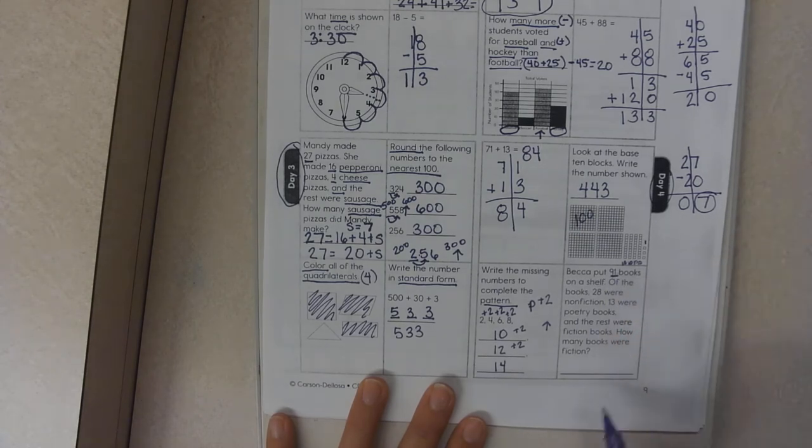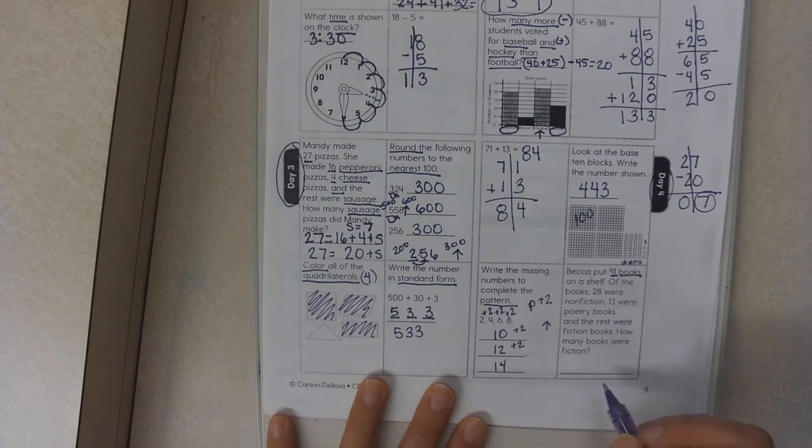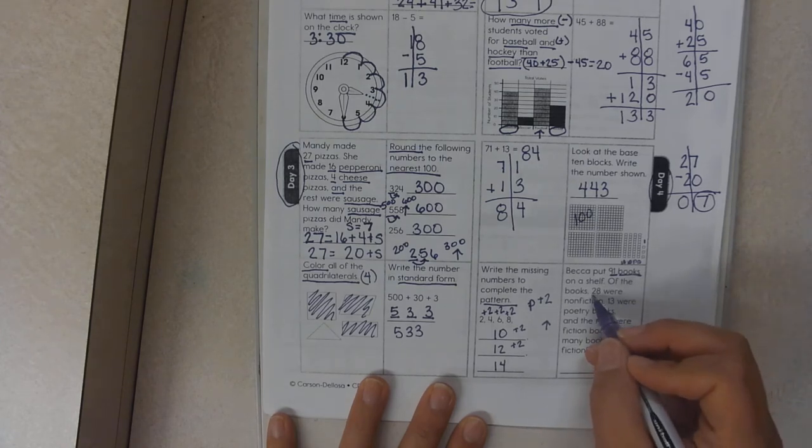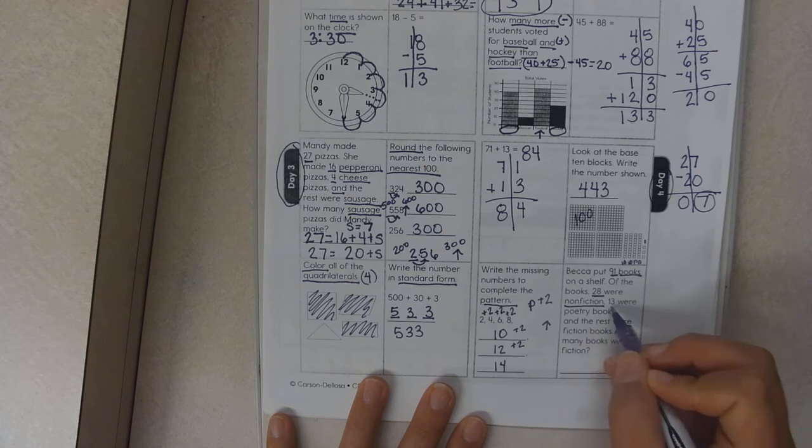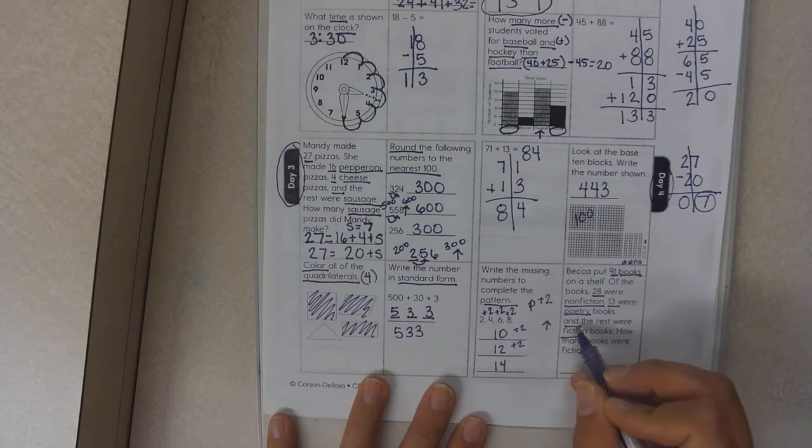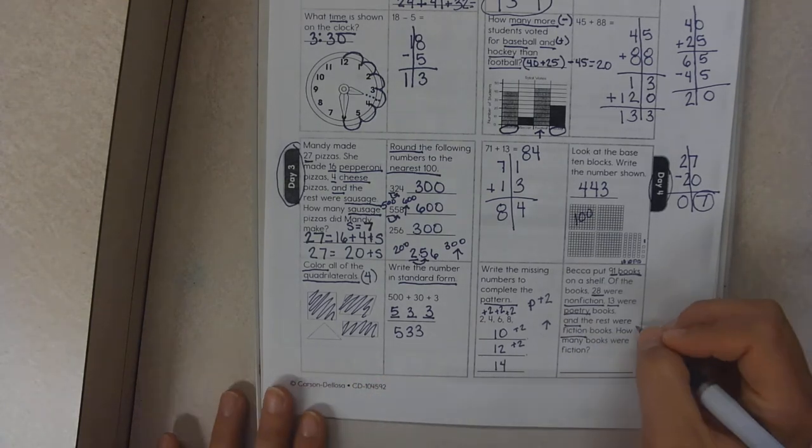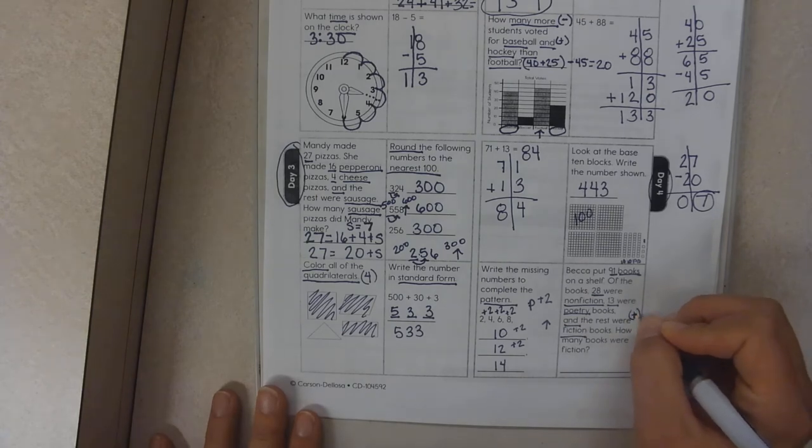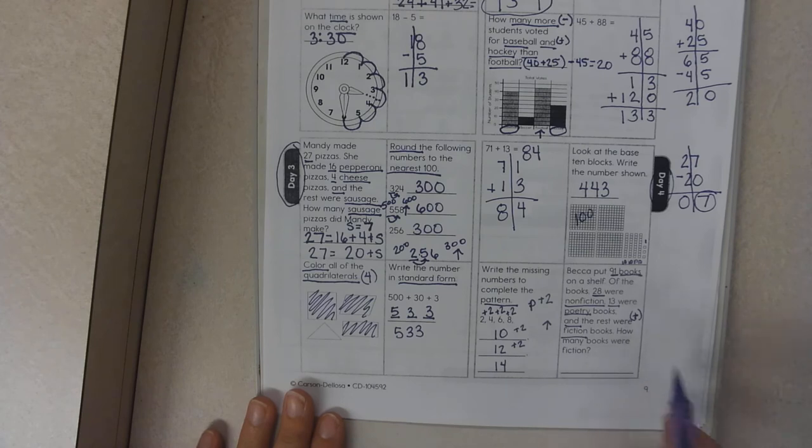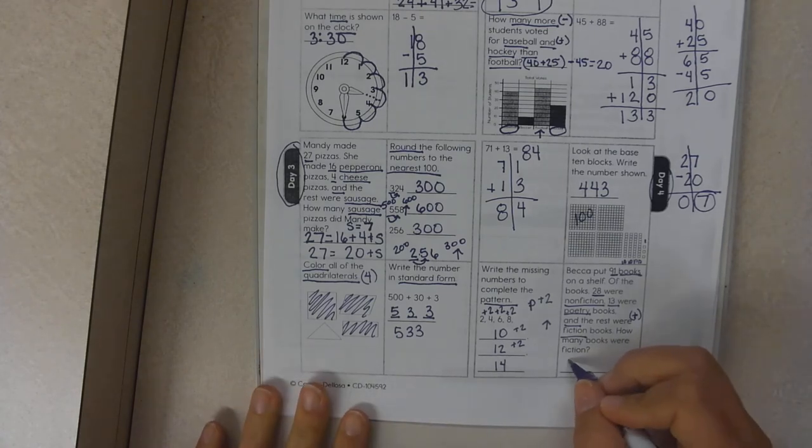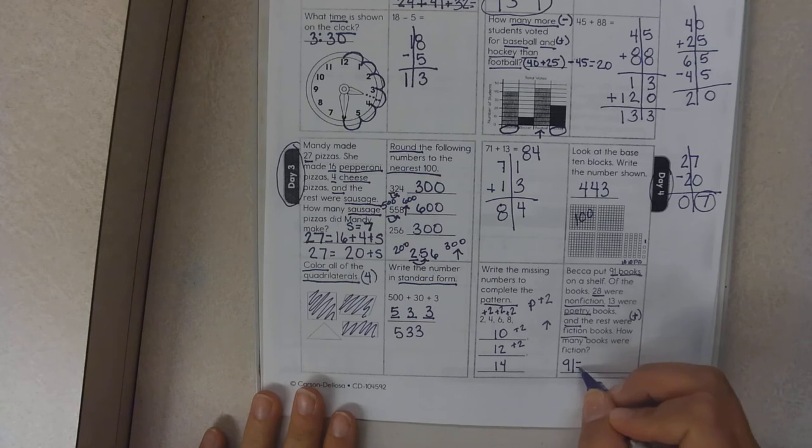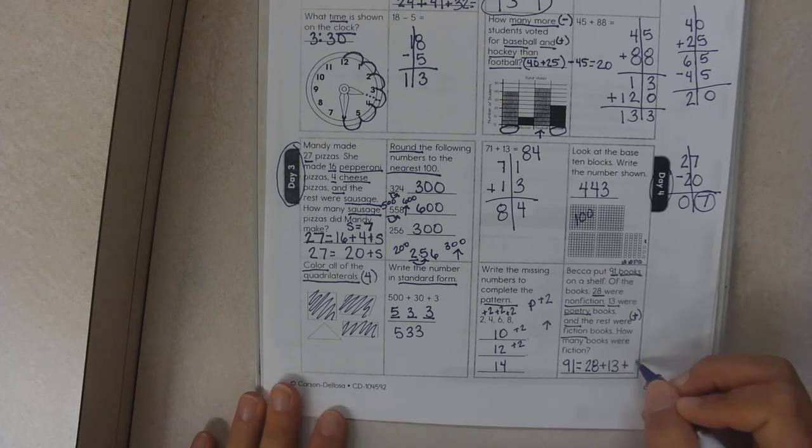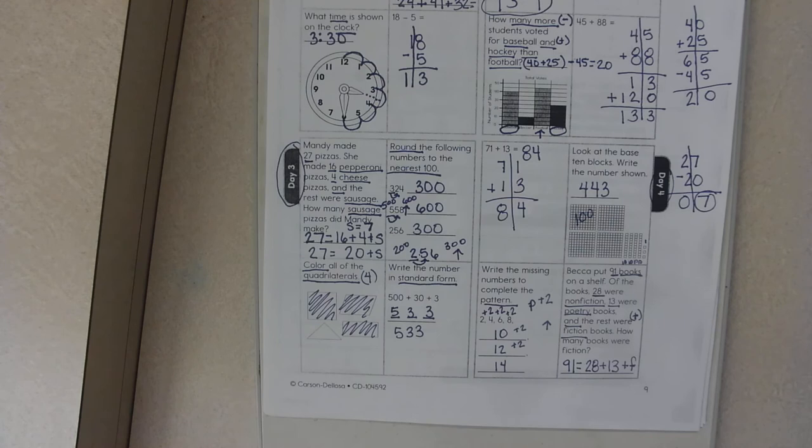Becca put 91 books on a shelf. So she's got 91 books. Of books, 28 were nonfiction, 13 were poetry, and the rest were fiction. Here's that 'and' word. That 'and' word usually means addition as of right now. So how many books were fiction? So we're going to write our total. Our total is 91 and it is equal to 28 plus 13 plus F for fiction, because I don't know what is the number for fiction.